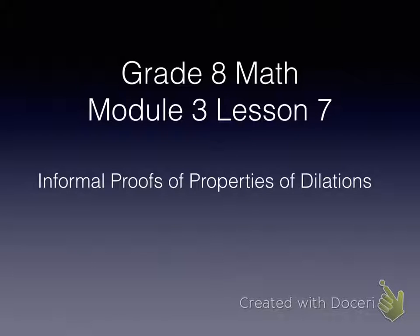Okay, we're on Lesson 7 of Module 3, Informal Proofs of Properties of Dilation. I'm just going to do a real shortened version of this, and this lesson is optional anyway, so I would suggest, if anything, just watching it and doing the exit ticket. But this does give us a little bit more understanding of why angle measures are preserved in dilations, even though lengths of segments are not. And so we're going to look at an example of that right now.